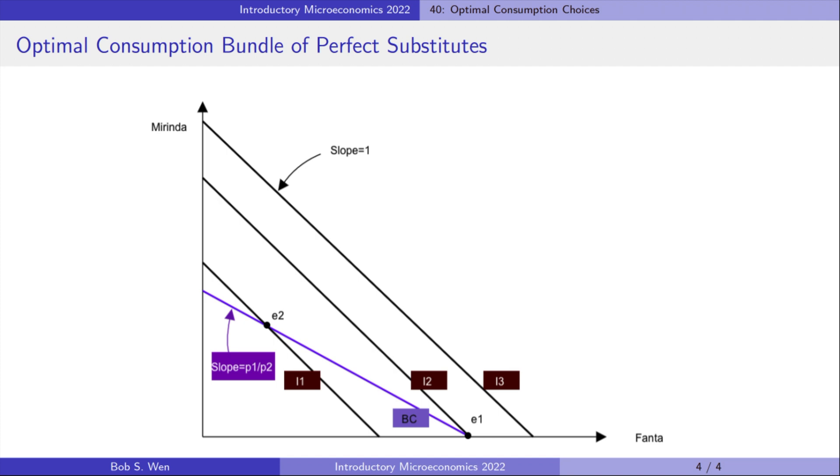Both Fanta and Marinda produce the same utility. So the last dollar gives the consumer a higher utility if it is spent on Fanta. Because the last dollar spent on Fanta gives her higher utility, the consumer should spend her entire income on Fanta.